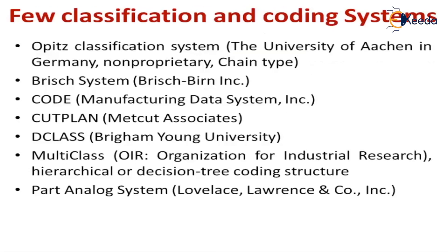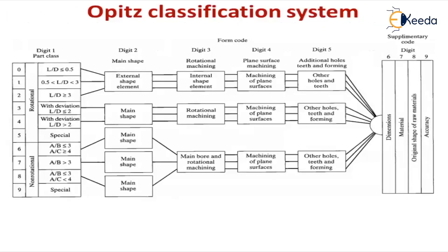Two classification coding systems available in industry are the Opitz classification system, which is a very famous system, and the Brisch code. Other systems include CODE, DCLASS, Multi-Class, and others. All of these are various coding system schemes.